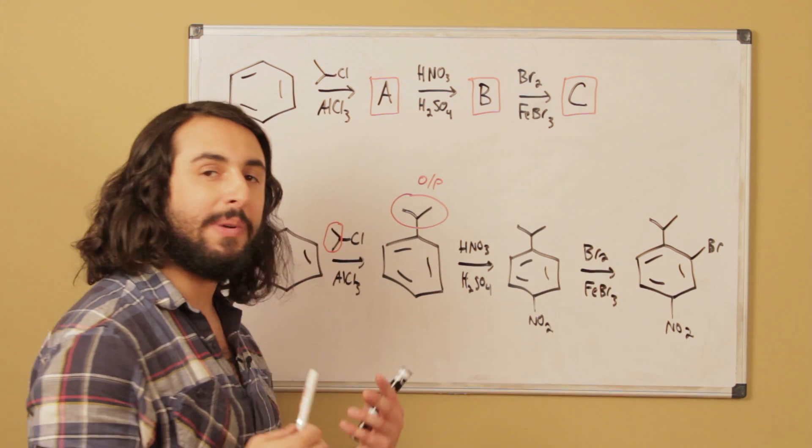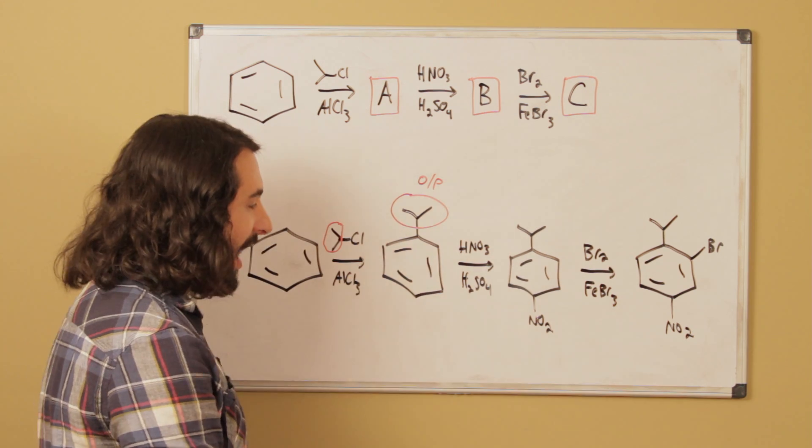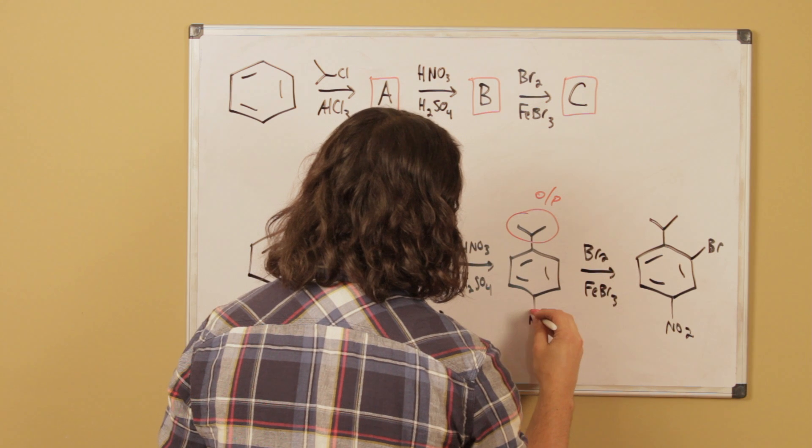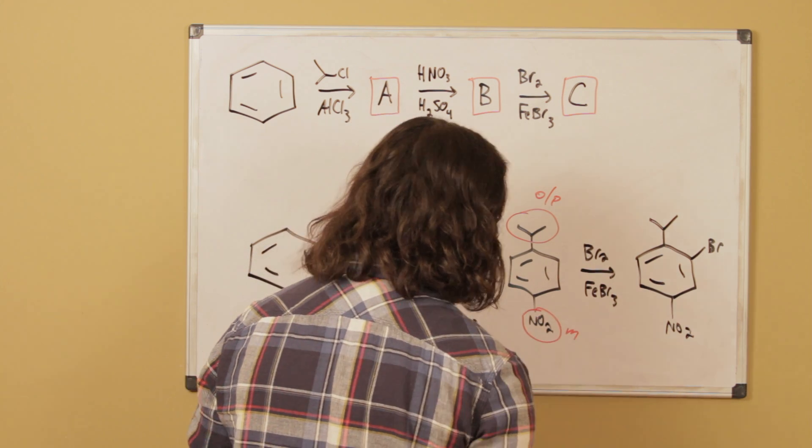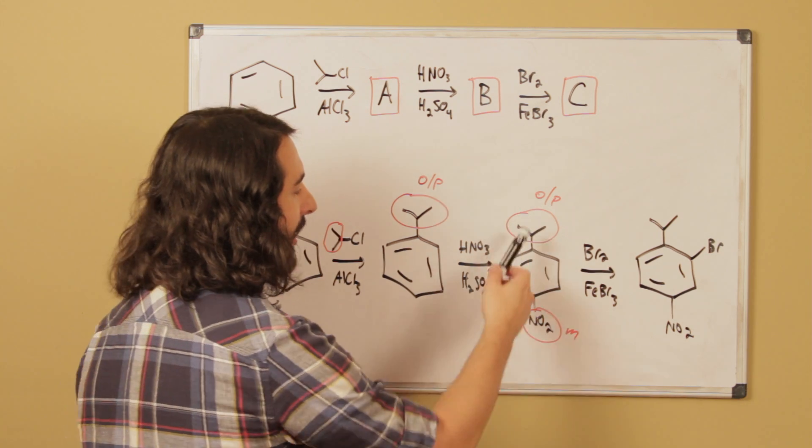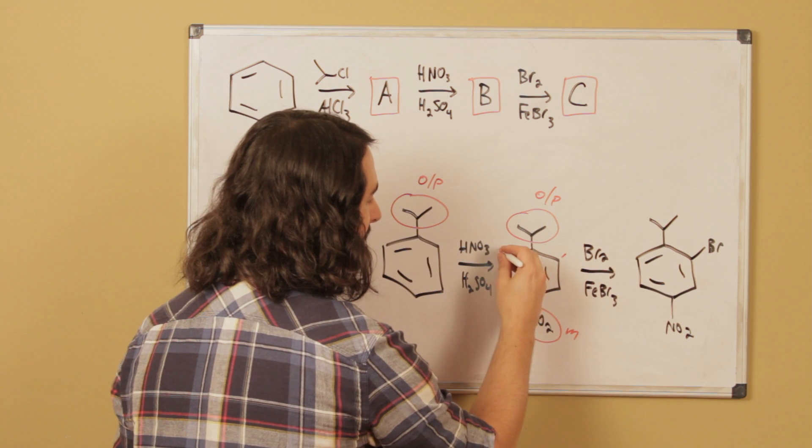And then once I have this disubstituted benzene, the third step here we've got a bromination—these are the conditions for bromination of the benzene ring. And now what we have here, this is ortho-para and this is a meta director. And so what that means is that the ortho-para positions here, well this is ortho, this is ortho, and then this is para which is already occupied.